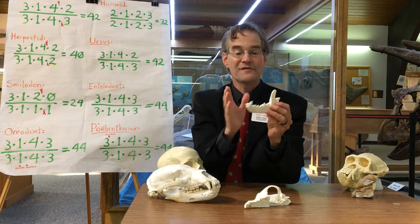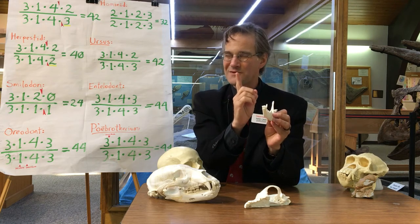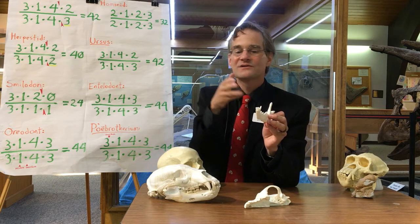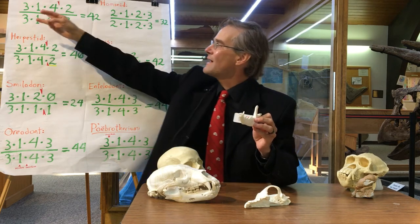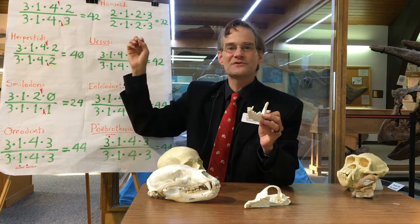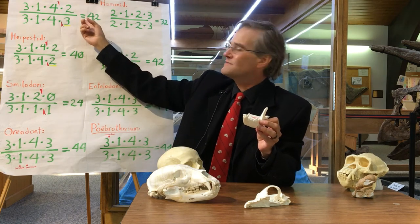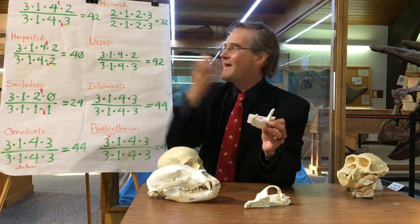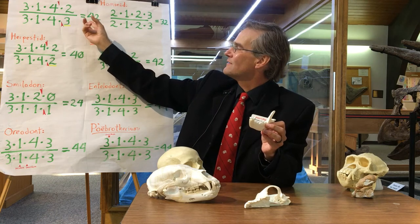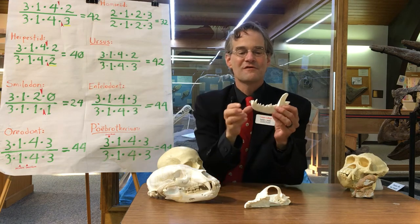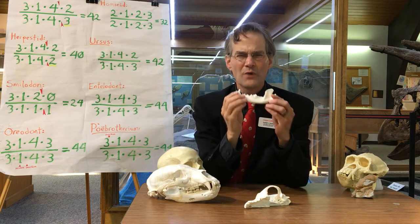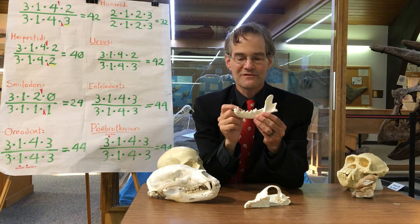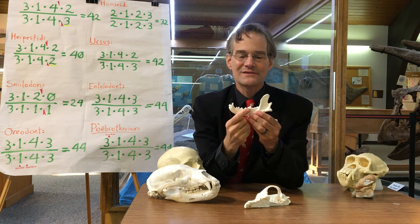In a mammal you have the same number of teeth almost always on the right side and the left side of each jaw. So when you add up all of these numbers, you multiply that figure by two and that gives you the total number of teeth in the mammal's head. In the case of the dog, that number is 42.